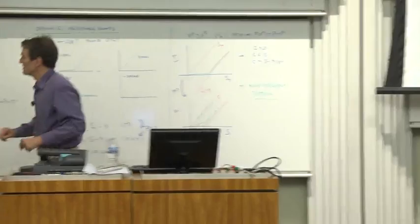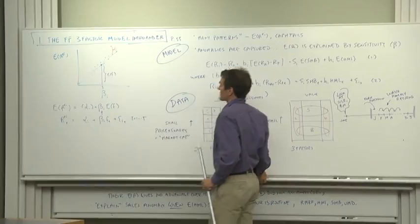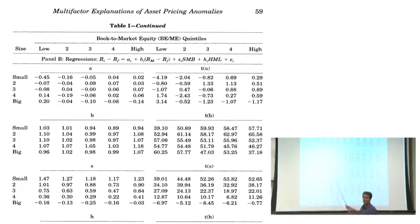It's the test of the model, if you will. The intercepts of the time series regression are the errors of the cross-sectional regression. What we're looking at in those intercepts is how far are the assets off of the line relating expected returns and betas. So are they small, as Fama and French say? Well, most of them are small.